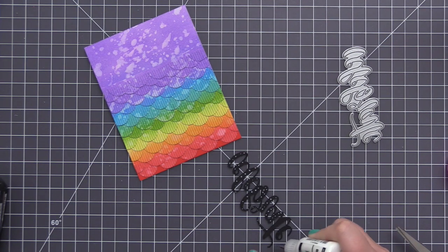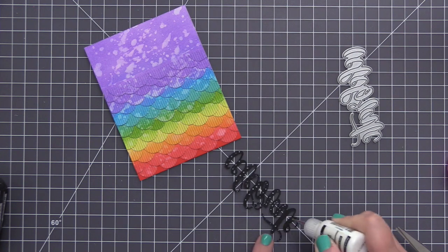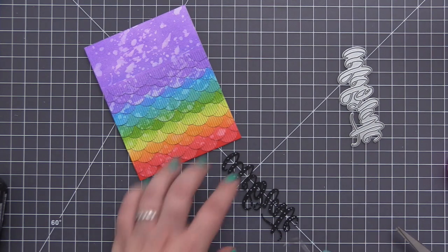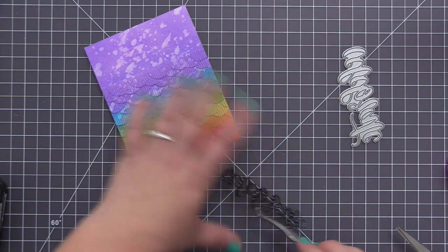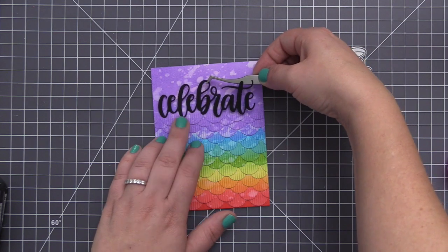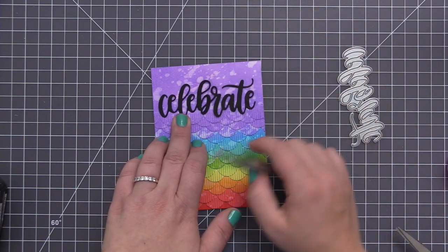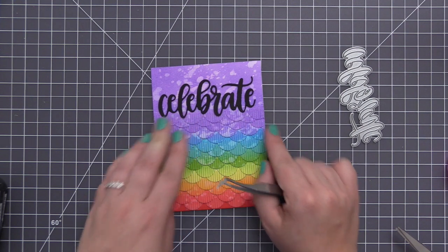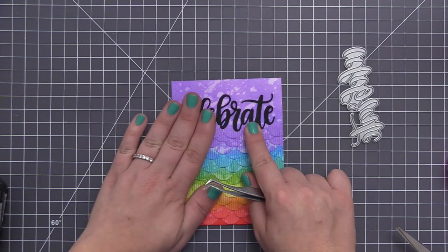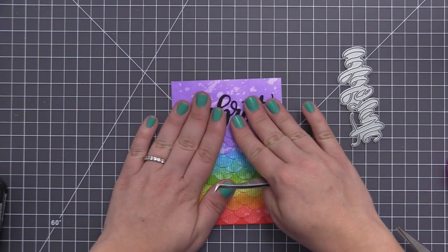I like using liquid glue when I do a sentiment like this because it allows me to have a little bit of room to kind of move it around before the adhesive really sticks down on the card. To add this on I like to use my tweezers. It just helps me kind of see better—it gets my fingers out of the way and I'm able to make sure I have it lined up exactly how I want it. So I just positioned it up there at the very top of the card and then once I had it exactly how I wanted it, I just pressed down and made sure that it was fully adhered.